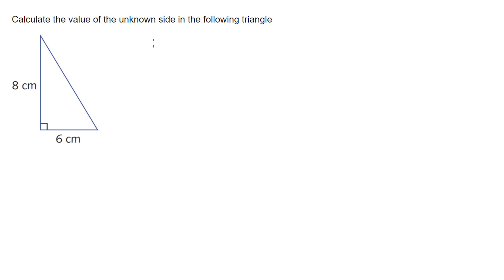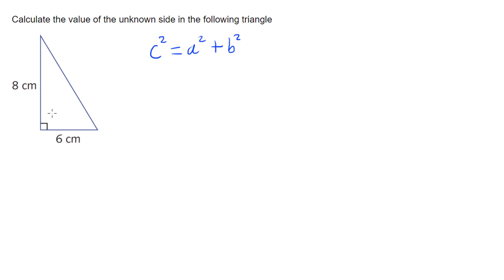Pythagoras's theorem says the sum of the squares of these two sides is equal to the square of the third side. It's usually written as c² = a² + b². So a and b represent the two shorter sides and c represents the hypotenuse, or the longer side. We square these two, add them together, and that would be the same as the square of the hypotenuse.